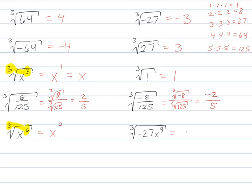Again, I'm just going to divide. 6 divided by 3 is x squared. This one I'm going to break up into pieces again. The cube root of negative 27 times the cube root of x to the 9. So it's negative 3, 9 divided by 3 is x cubed.